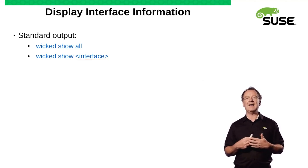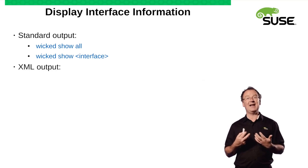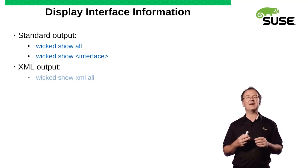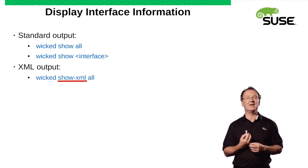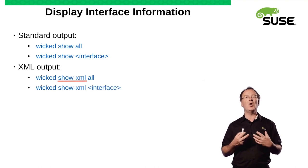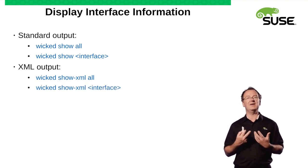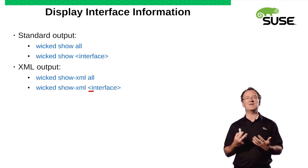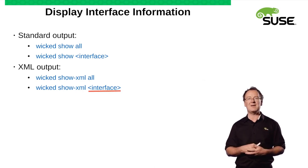We can also view this as XML output. So the command is wicked show --xml all to show the information about all the interfaces. Or we can run the same thing and put the specific interface name on the end, such as eth0 for example.